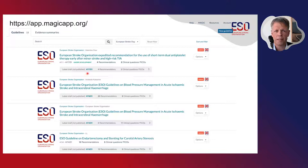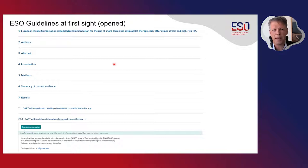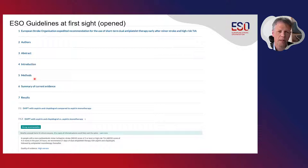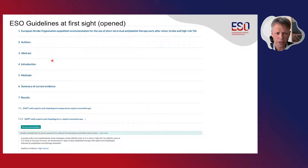If you click on one of these links, such as the expedited recommendations for the use of short-term dual-antiplatelet therapy early after minor stroke and high-risk TIA, you will be taken to a window that always looks like this. By clicking on the icons, you receive information on authors, the abstract, and the introduction. By default, the window on the recommendations is open, as this is what most people are interested in first.